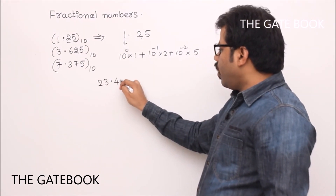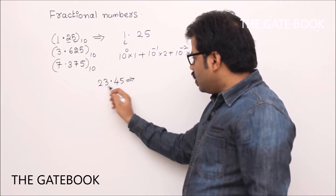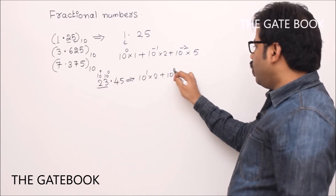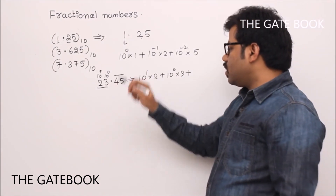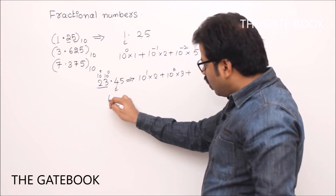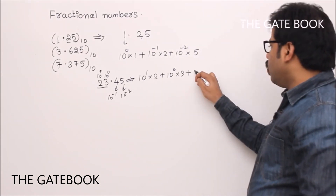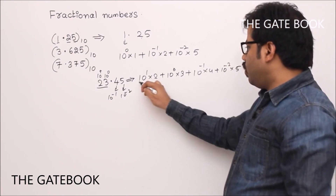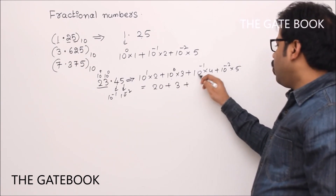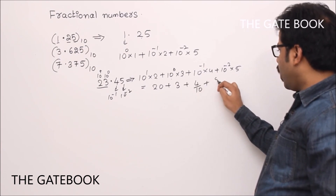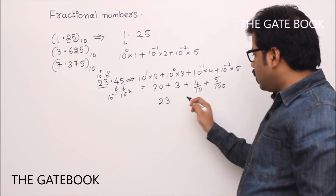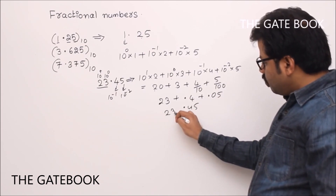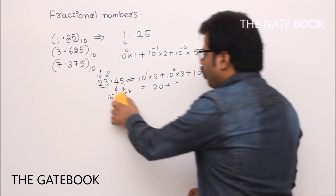For example, if you have 23.45, that can be written where 2 has 10 power 1 weightage and 3 has 10 power 0 weightage. So it becomes 10 power 1 into 2, plus 10 to the power of 0 into 3, plus 10 power minus 1 into 4, plus 10 power minus 2 into 5. That gives 20 plus 3 plus 0.4 plus 0.05, which equals 23.45. That is the way this number system is built.